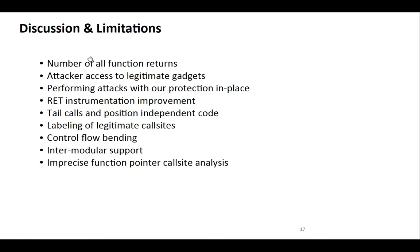Coming to the discussion: it's important to mention that the number of function returns is very important — the lower this value, the better, since the attacker has access to fewer legitimate gadgets. Performing an attack is still possible with our protection in place; RET instructions should be replaced with POP and JMP instructions, which makes stitching gadgets more difficult for the attacker. Tail calls are currently not supported, because we insert NOPs to label where callees can return to. In cases of control flow bending, our protection can be circumvented. We currently don't have intermodular support, and the function pointer call site analysis can be improved.